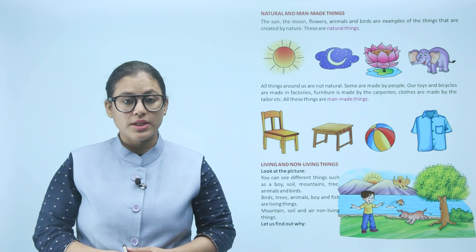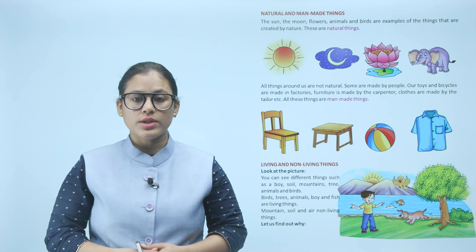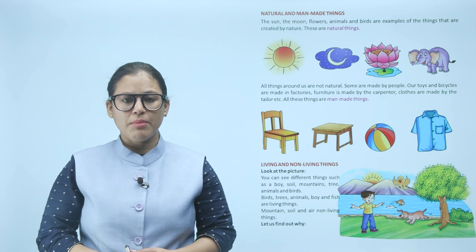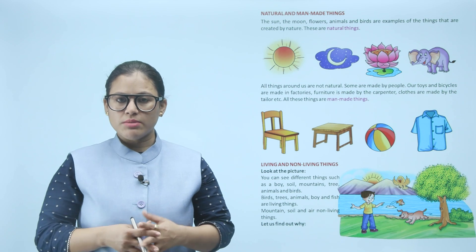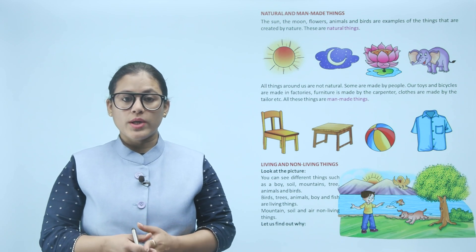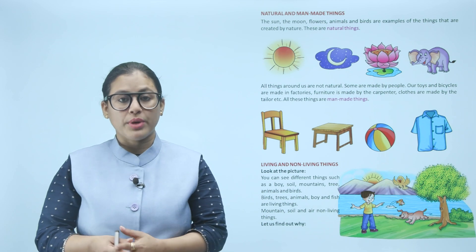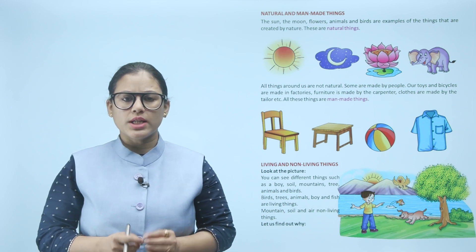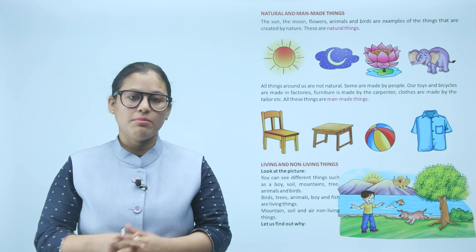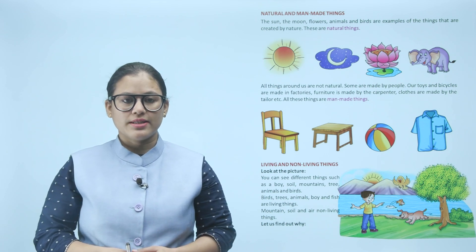All things around us are not natural — some are made by people. Our toys and bicycles are made in factories, furniture is made by the carpenter, clothes are made by the tailor. These are man-made things. Hamari toys, bicycles, furniture, aur clothes — yeh sab man-made things hain.